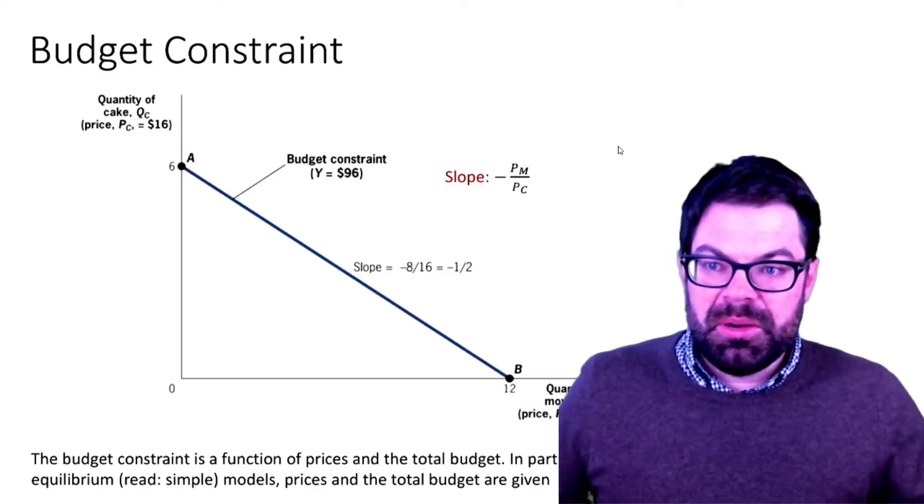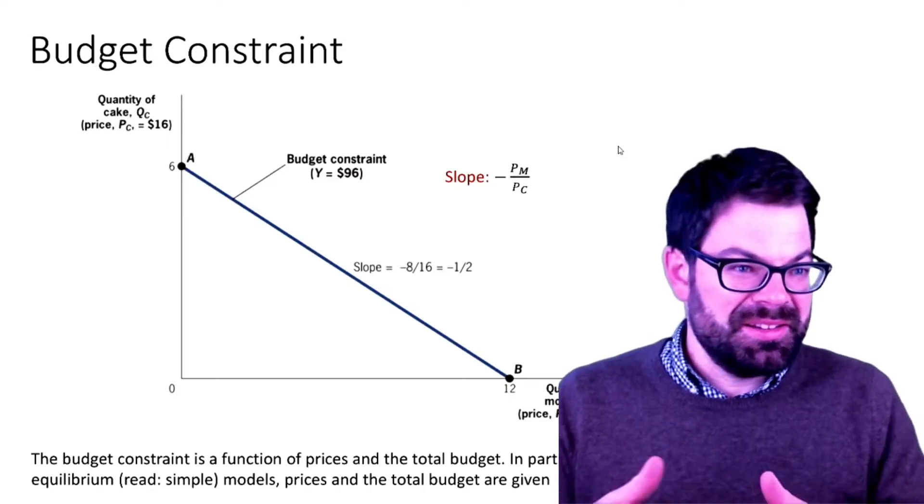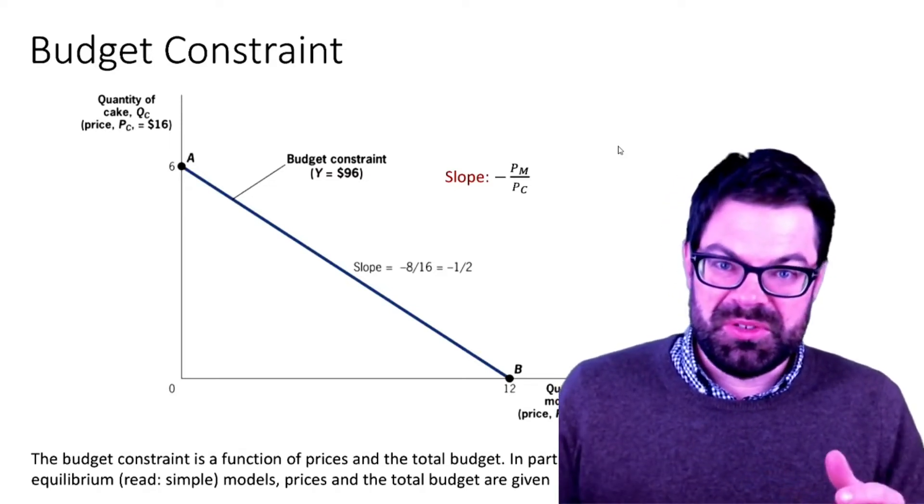In this video we're going to first talk about the second crucial ingredient, namely a person's budget constraint.